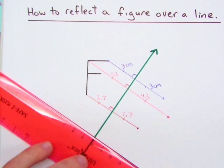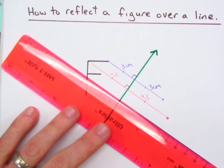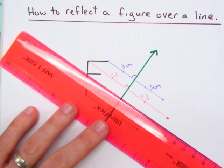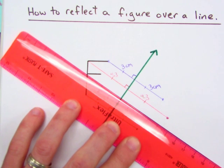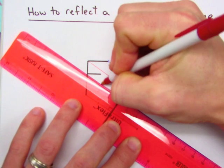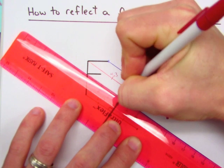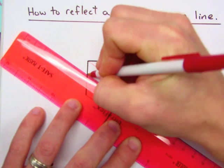And we actually have two more points that we need to do. So we'll do this one here. Line up your ruler perpendicular. Measure the distance. This is about 3.7.